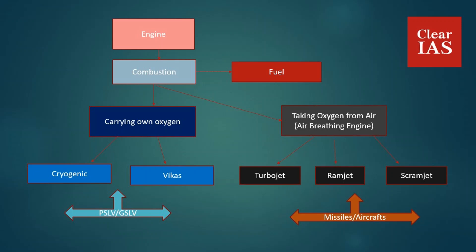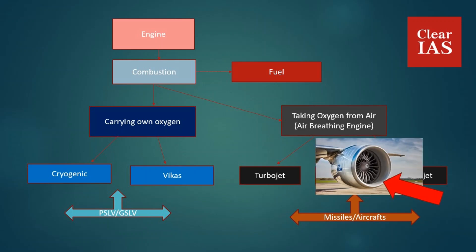In air-breathing engines, atmospheric air comes inside the engine. We require pressurized air — when air or oxygen mixes with fuel, we need compressed air. To make the incoming air compressed, some engines use blades, otherwise called turbines. You can see turbines in the picture; these are for compressing the incoming air.